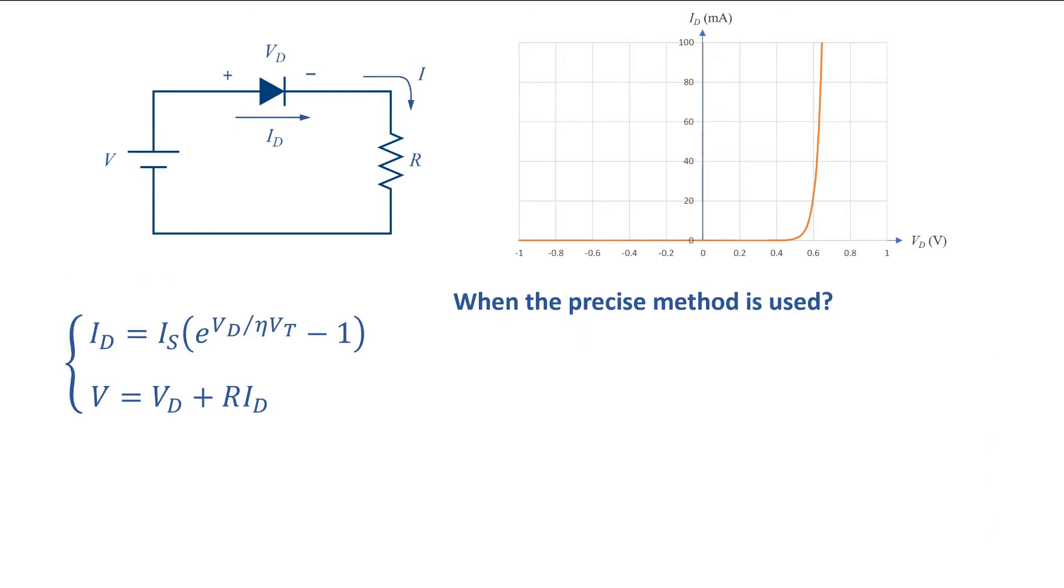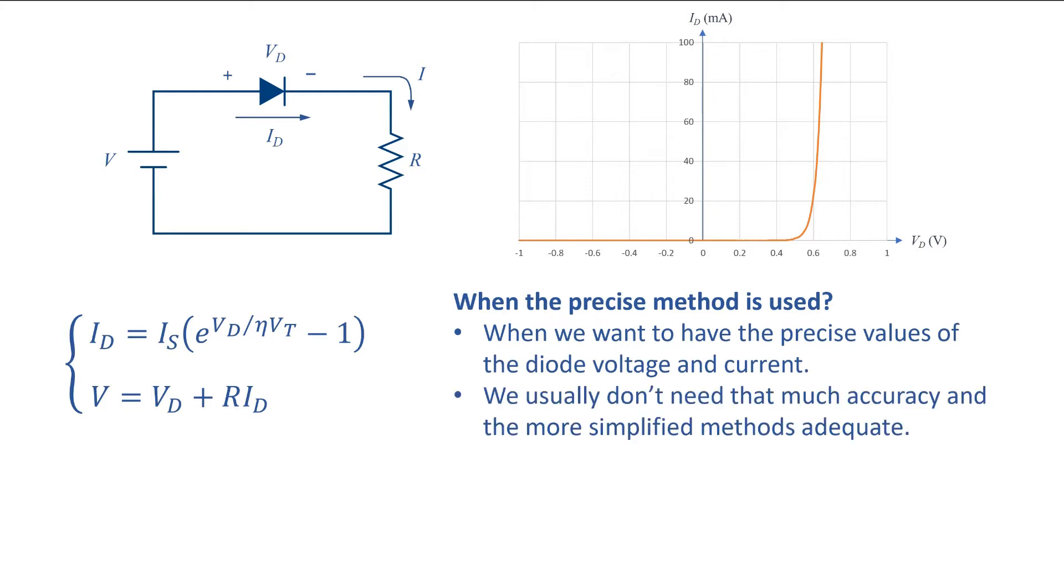When do we use the precise method? Obviously when we want to have the precise values of the diode voltage and current. In diode circuits we usually don't need that much accuracy and a more simplified method like constant voltage would be enough.